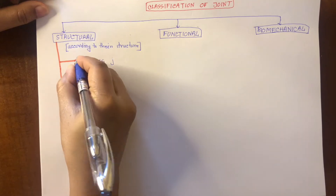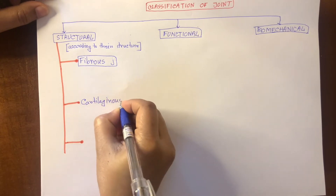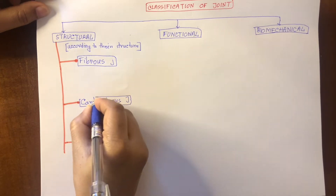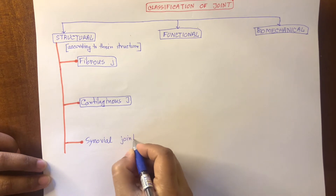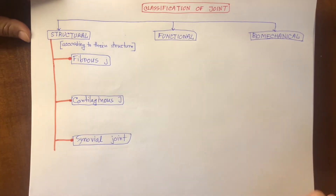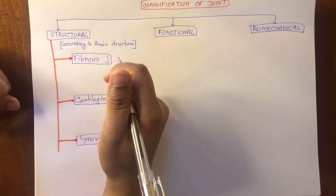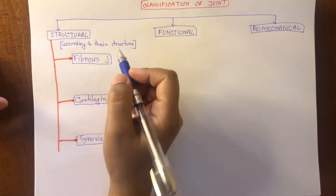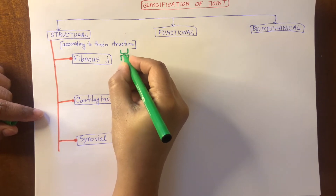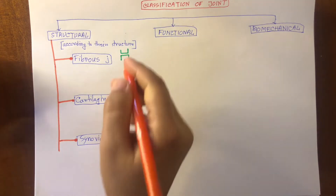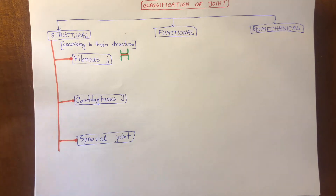These three types are: fibrous joint, cartilaginous joint, and synovial joint. Now first let's see what is a fibrous joint. A fibrous joint is a type of joint where bones are connected by a tough or dense fibrous connective tissue. Suppose this is one bone and this is another bone — these two bones are connected by a dense or tough fibrous connective tissue. So this is a fibrous joint.